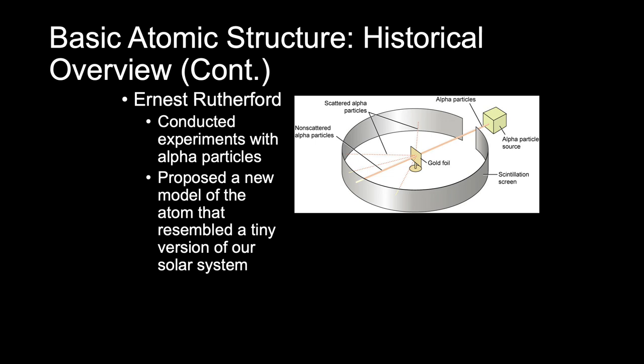Based on his experiments, Rutherford proposed a new model of the atom. His model resembled a tiny version of our solar system — a positively charged and very dense nucleus with tiny electrons orbiting in different paths. This model explained how some alpha particles could pass right through the gold sheet between the nuclei of atoms, missing the orbiting electrons, whereas others were deflected, repelled by the strong positively charged nucleus. This figure shows Rutherford's scattering experiment setup, which looks quite different from the plum pudding model.